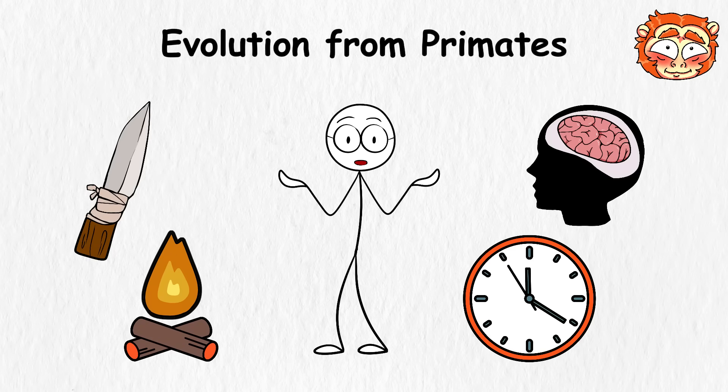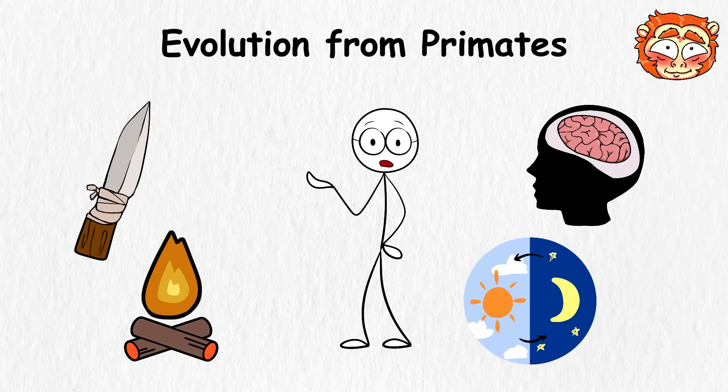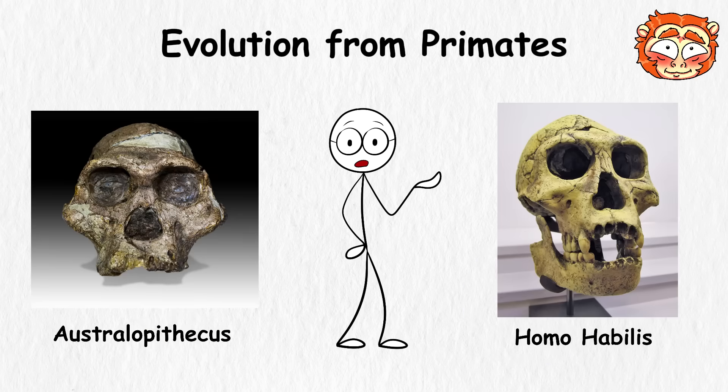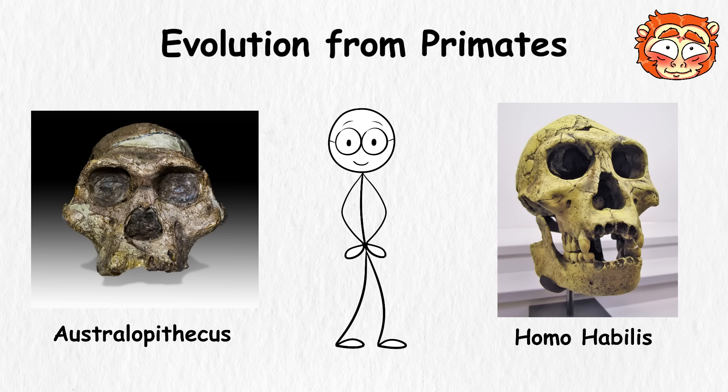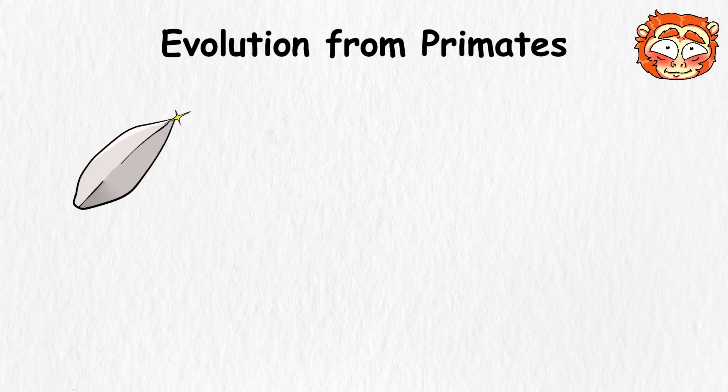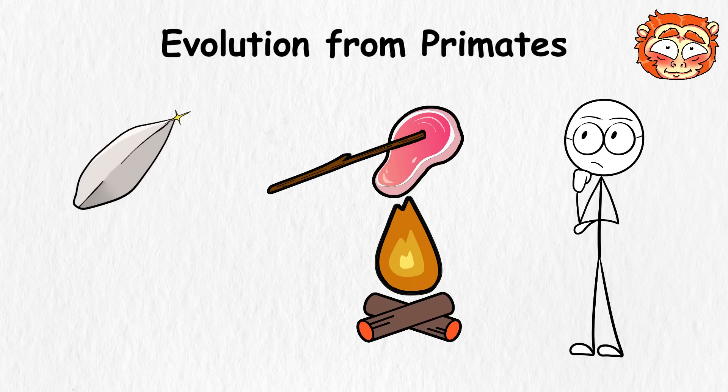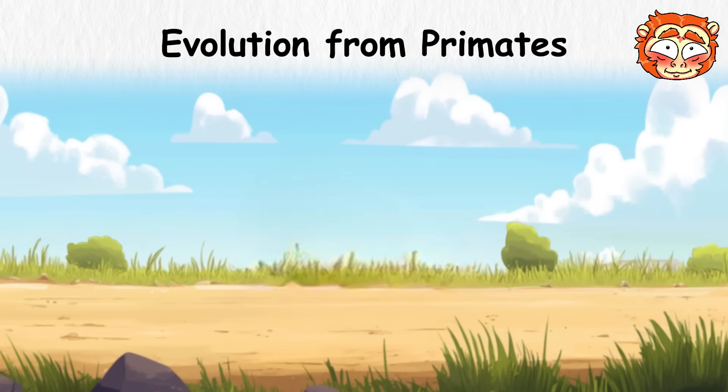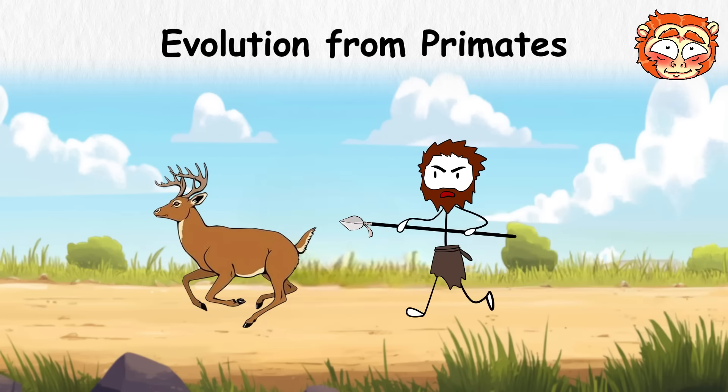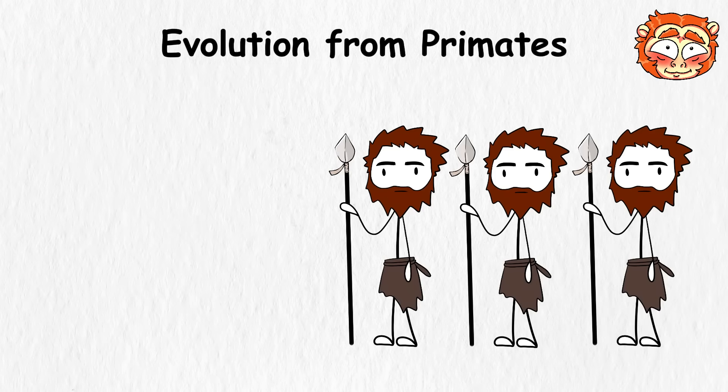and everything that came after. Over time, their brains started growing. Not overnight, but just a little bit with each generation. Fossils like Australopithecus and Homo habilis show us the steps in between. These weren't modern humans, but they were getting closer. Eventually, Homo sapiens showed up.